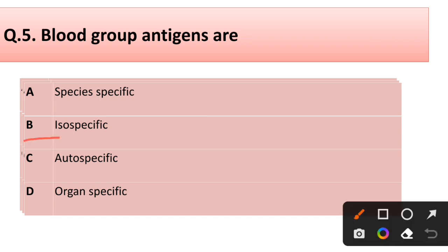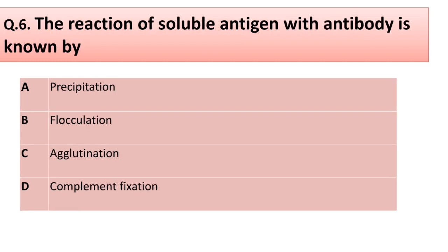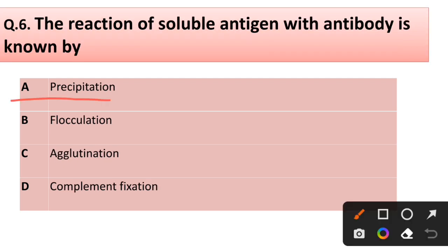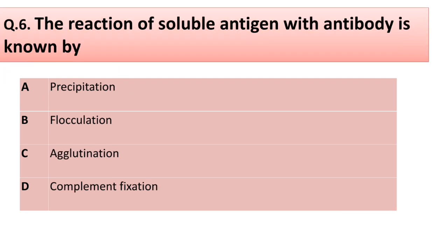Question number five: Blood group antigens are — species specific, isospecific, autospecific, or organ specific? Correct answer is option B: isospecific. Question number six: The reaction of soluble antigen with antibody is known by — precipitation, flocculation, agglutination, or complement fixation? Correct answer is option A: precipitation.